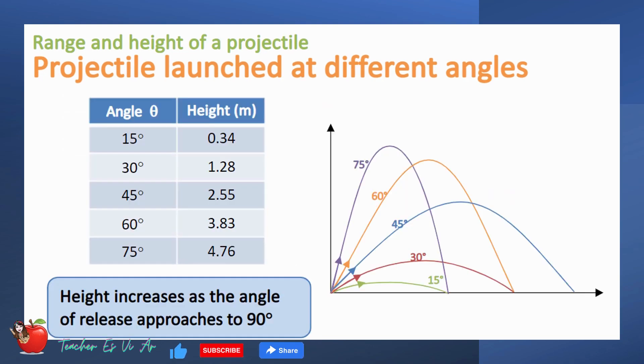The height for each angle was recorded on the table. What can you notice on the height as the angle of release approaches 90? The height increases as the angle of release approaches 90.